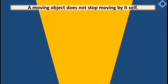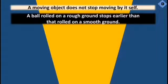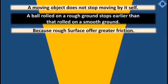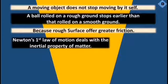Another example: a ball rolled on a rough surface stops earlier than one rolled on a smooth surface. This is because rough surface offers greater friction. So the ball on the rough surface stops sooner due to more friction acting on it.